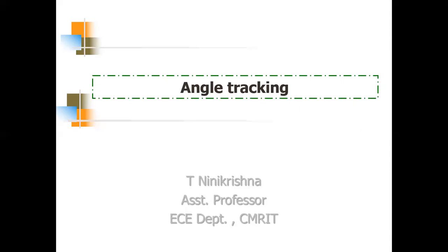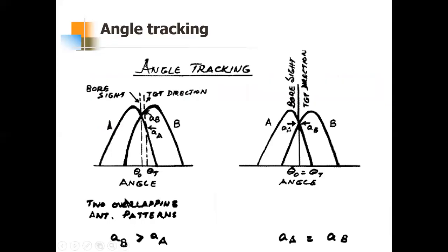We will first focus on a single angular coordinate — either azimuth or elevation — and then move to two angular coordinates. Consider a single angular coordinate and assume we have two beams simultaneously pointing in two different directions, that is, two different beam positions. Assume two such beams: beam A and beam B, and these two beams are said to be squinted.